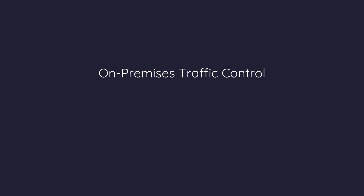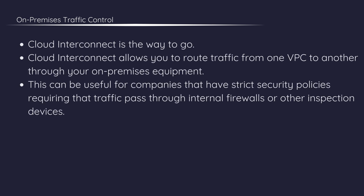But what if you need to route traffic between VPCs using your own on-premises devices? Maybe you have a high-end firewall or a custom security appliance that you want to use. In this case, Cloud Interconnect is the way to go. Cloud Interconnect allows you to route traffic from one VPC to another through your on-premises equipment. This can be useful for companies that have strict security policies requiring that traffic pass through internal firewalls or other inspection devices. I mentioned Cloud Interconnect in more detail in our hybrid cloud video, so dropping the link for that video here.